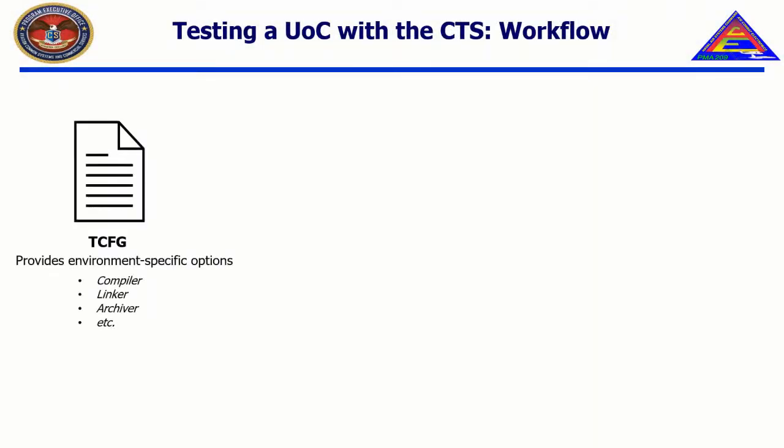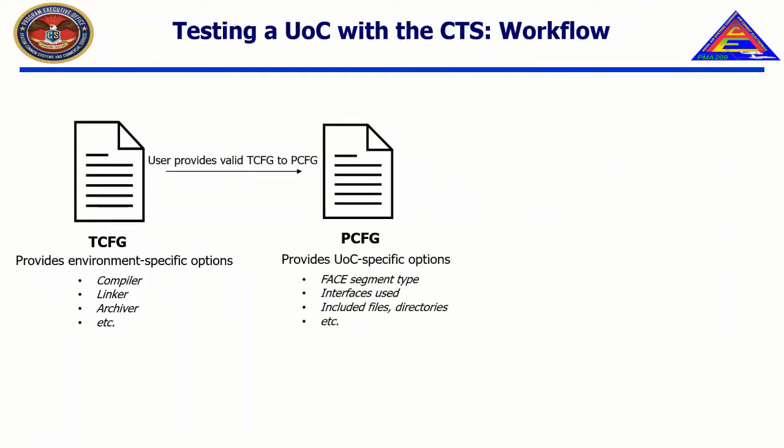In Chapter 1, we introduced project and toolchain configuration files, or PCFGs and TCFGs, respectively. A toolchain configuration file allows the user to define a target environment for a UOC to be tested against. The contents of a toolchain configuration file are configuration options for the CTS to interpret the user's target environment. The contents of a project configuration file are configuration options for the CTS to interpret the user's UOC-specific options. The project configuration file relies on a valid toolchain configuration file. If the target environment is not valid, then the UOC-specific options cannot be tested.